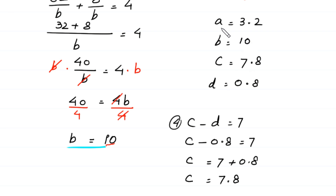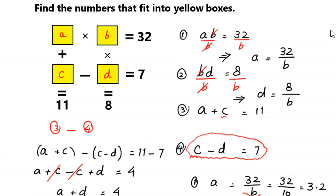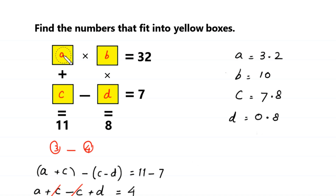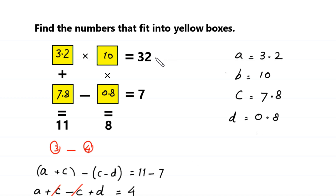So these are the four values: A, B, C, and D. Now let's verify these values in the original puzzle. We put A equals 3.2, B equals 10, C equals 7.8, and D equals 0.8 into the boxes. Checking: 3.2 times 10 equals 32. 3.2 plus 7.8 equals 11. 10 times 0.8 equals 8. And 7.8 minus 0.8 equals 7. So all equations are true. Thanks for watching.